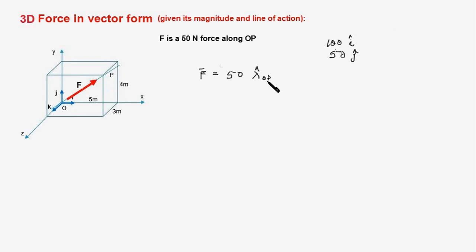But how do we find out lambda_OP? Lambda_OP can be found from the position vector OP. How do we represent the position vector OP? We travel from point O to point P, and while traveling from O to P we figure out how many units of x-coordinates have increased or decreased, how many units of y-coordinates have increased or decreased, and how many units of z-coordinates have increased or decreased.